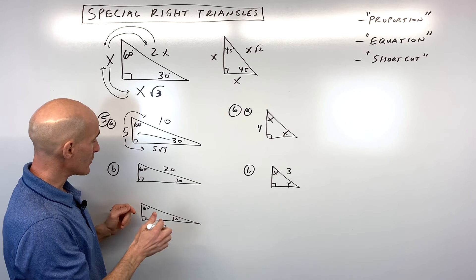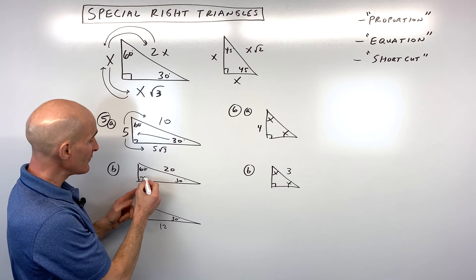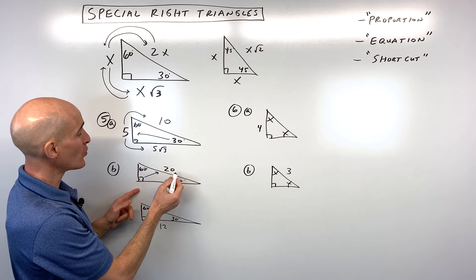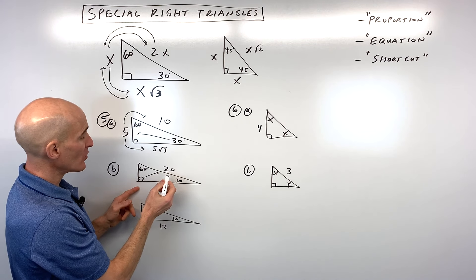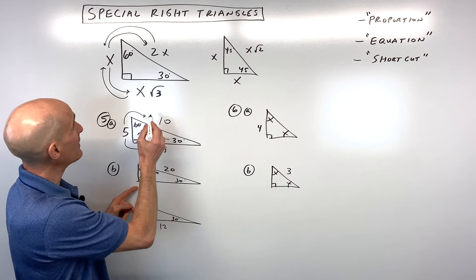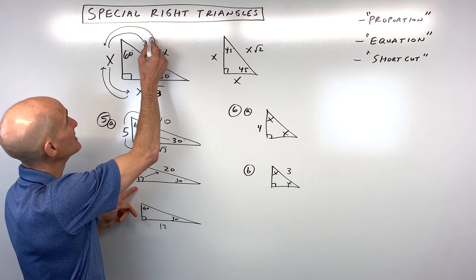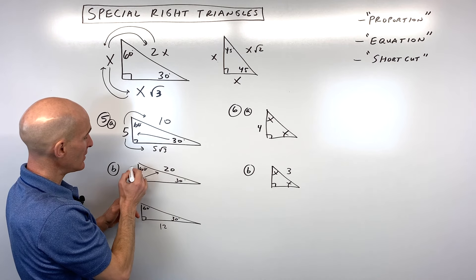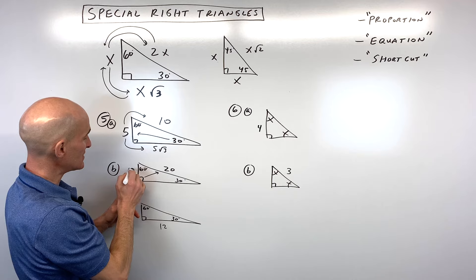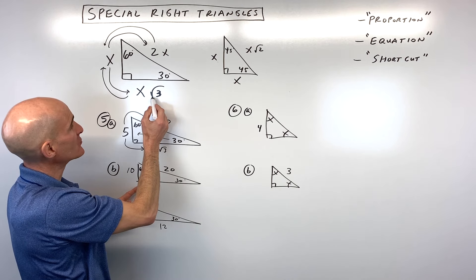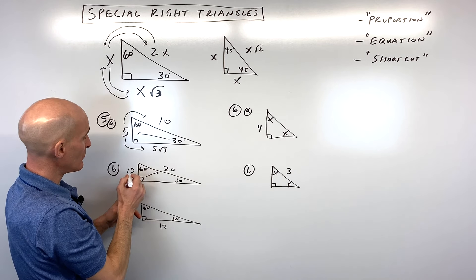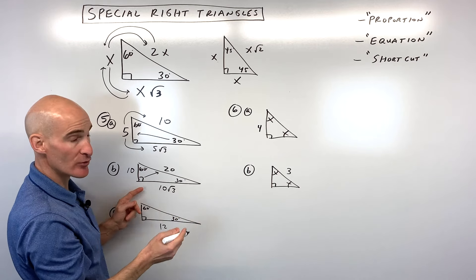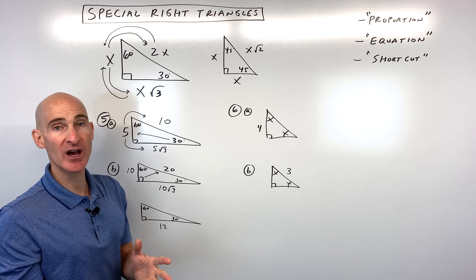For letter B, we're given the side across from the 90-degree angle — the hypotenuse — which is 20. That's the 2x side, so we divide by 2 to get x: that's 10. Then we multiply by square root of 3 to get the longer leg: 10 square root of 3. And you're done.